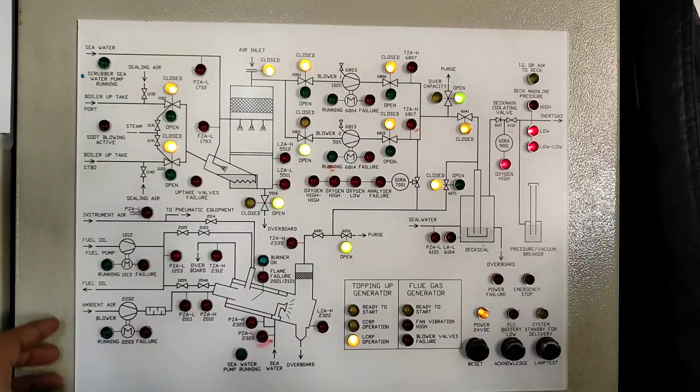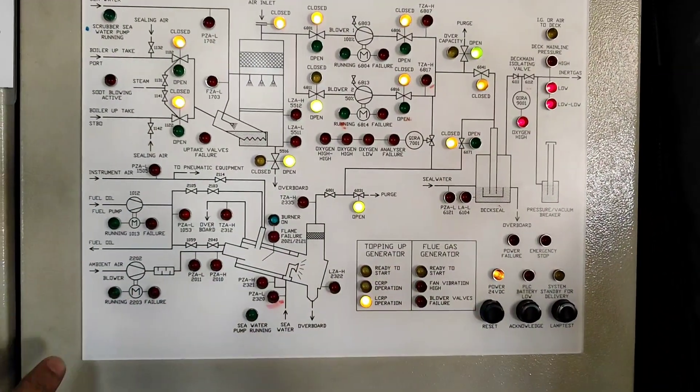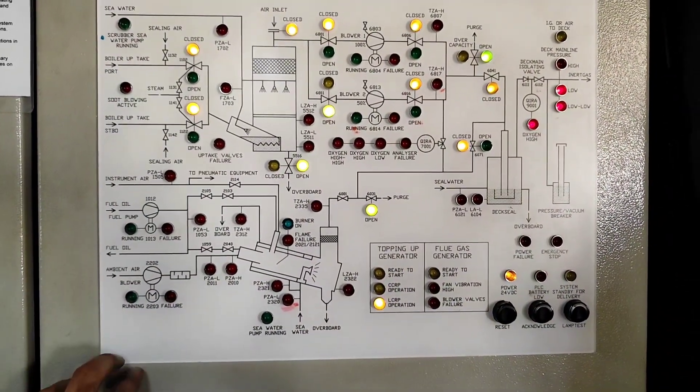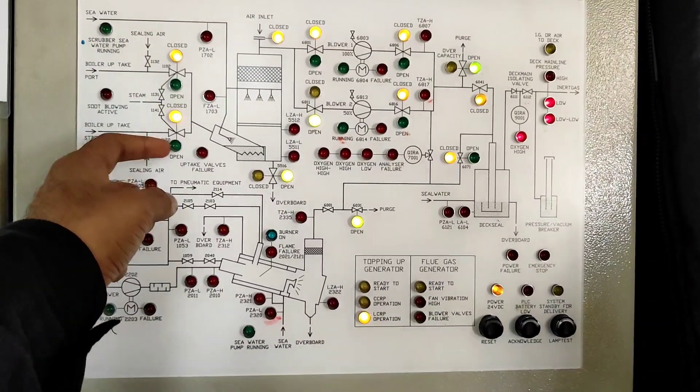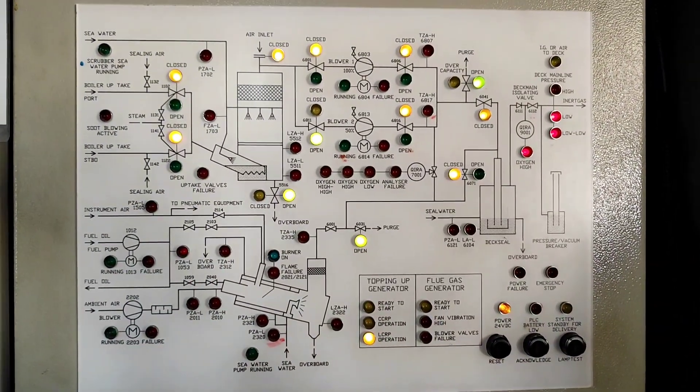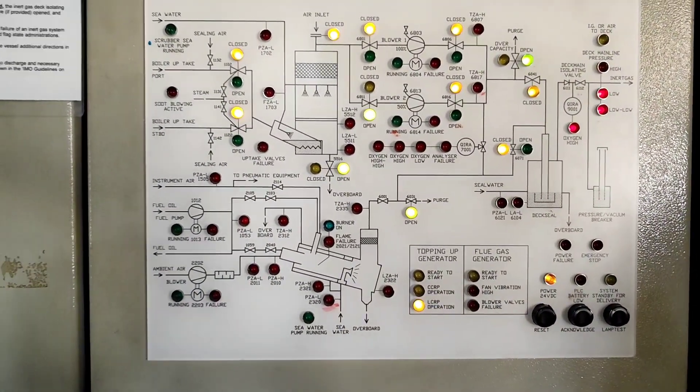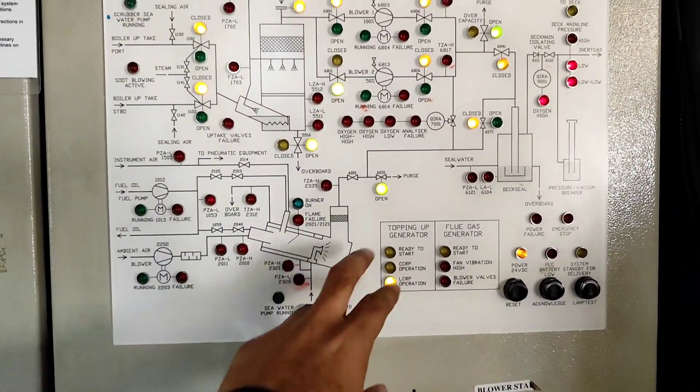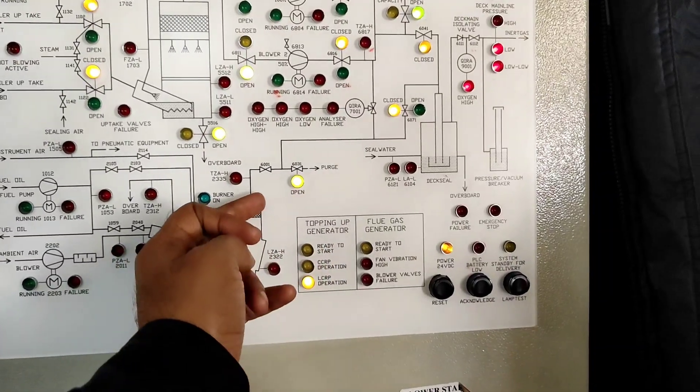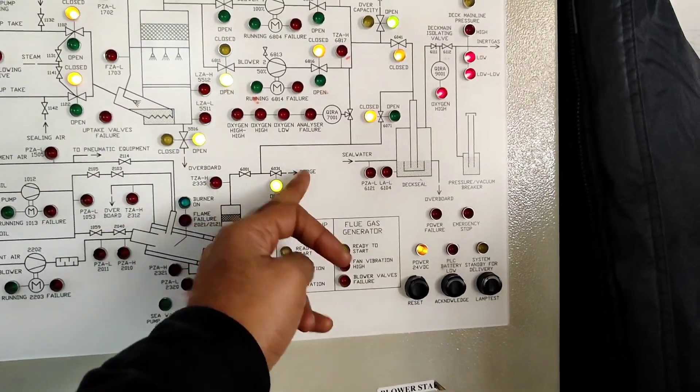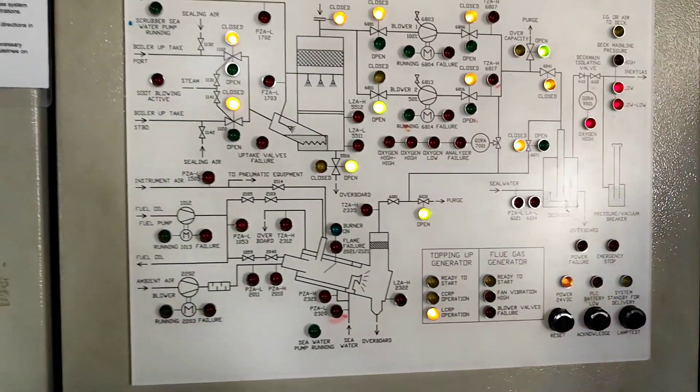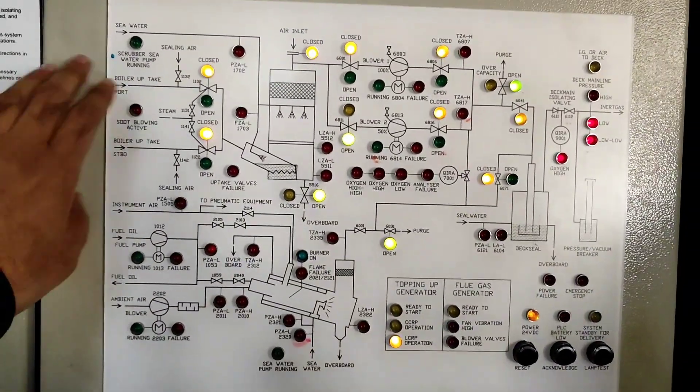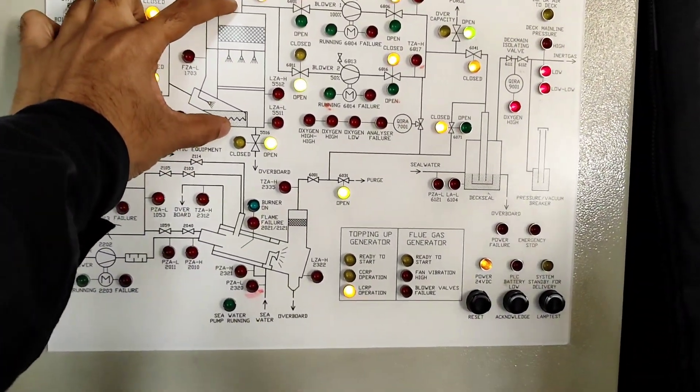You can see this is a mimic panel in which you will have a flow diagram, very good diagram, and then you have LED indication for open and close or it shows the flow of gases. Like if this is open it is going to the purge.